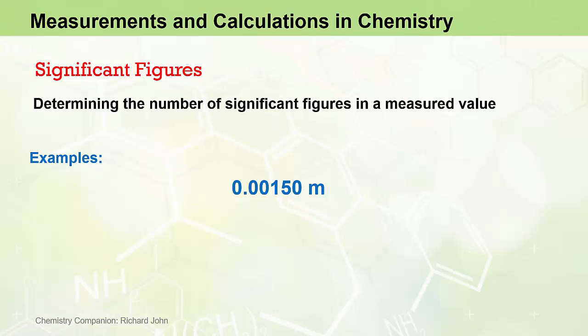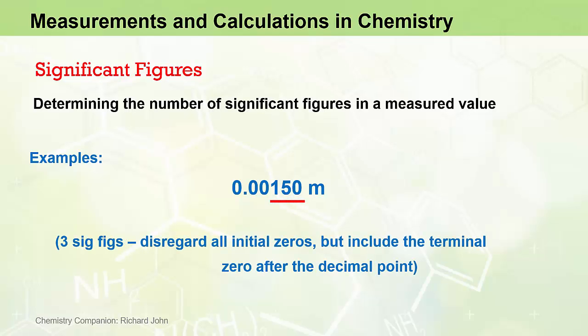We'll start our examples with this measured value here. 0.00150 metres has three significant figures because we disregard all initial zeros but include the terminal zero after the decimal place.